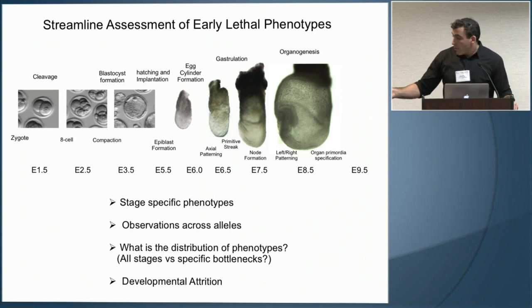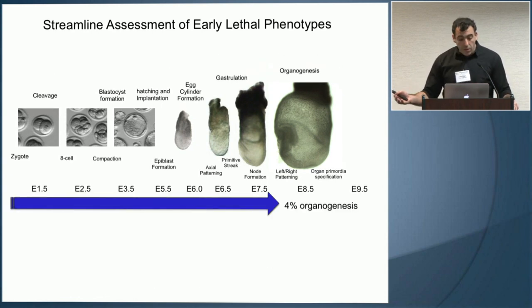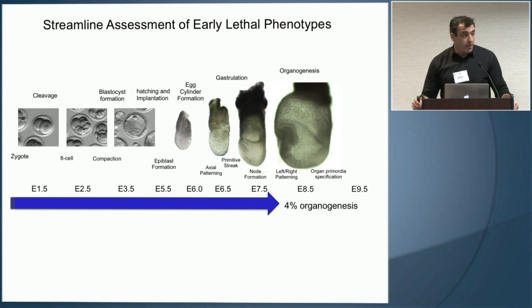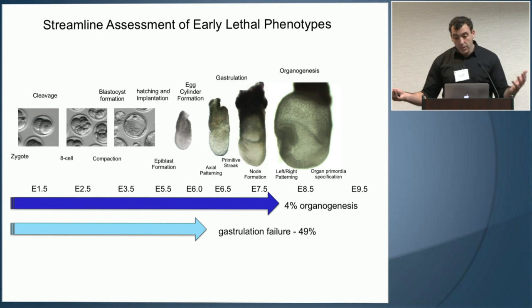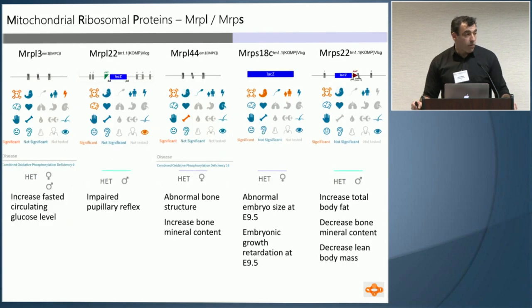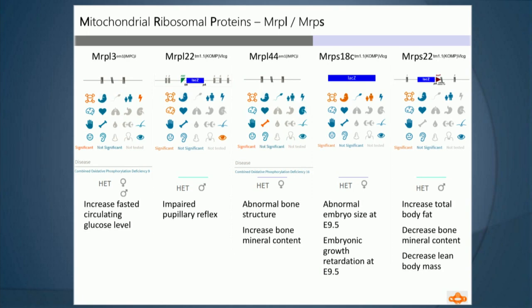So that's the baseline data we're providing on every line. I'll take you through a few short stories and then think about some larger ideas. We find only 4% of our lines make it through gastrulation with organogenesis defects — we've published a couple of those. The biggest group, 49% of our lines, we call gastrulation failures, and I'll tell you about a family we're working on: mitochondrial ribosomal proteins, or MRPs. We have a disproportionately high number of these in our set.